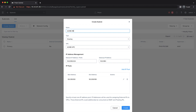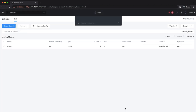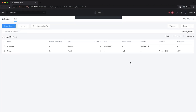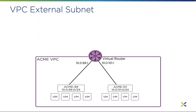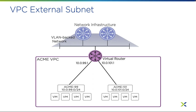To reiterate, an overlay network can only be attached to a single VPC. Any communication destined for hosts outside of a VPC will exit through an external network. That brings us to the next type of subnet used with a VPC — an external subnet.